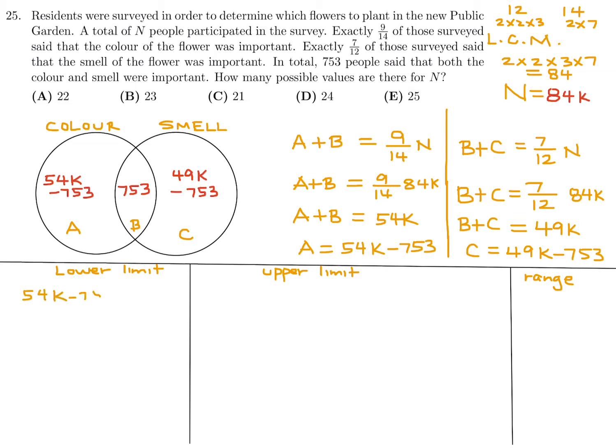Well, we know that a is equal to 54K minus 753 and c is equal to 49K minus 753. And both of those obviously have to be integers. So both of them have to be positive. So that's what gives us our lower limit. 54K minus 753 has to be greater than zero. From this, you can get that K is greater than 13.9. And then the other one, 49K minus 753, that's also greater than zero. So that gives me that K is greater than 15.3. So combining these, K has got to be greater than 15.3. So K is greater than or equal to 16 because K has to be an integer also. It represents the value of n. And n is also an integer because n represents the number of people. So this is our lower limit right here. K has got to be at least 16.